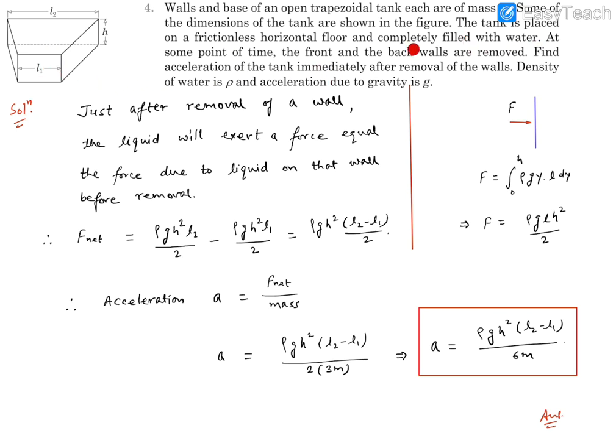Now once we are opening the two walls, one is the front wall and the back wall. So by opening them, basically we are removing the 2M mass. So remaining mass is going to be 3M.